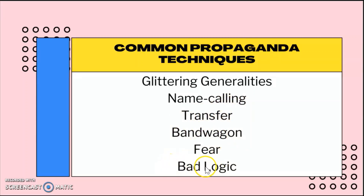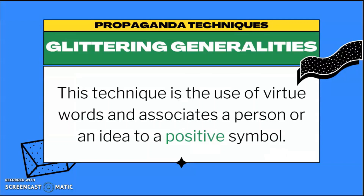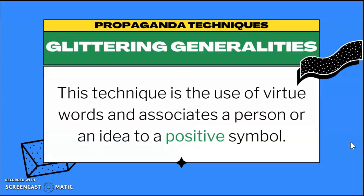We have glittering generalities. Glittering generalities is the technique we use to associate a person, an idea, or anything to a positive symbol. An example of this is branding — branding a product or a person. For instance, a politician could be branded as pro-poor, pro-democracy, pro-family, or pro-life. Something positive is associated with a person, a product, or an idea.